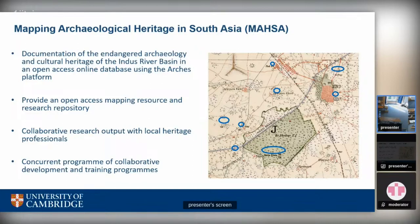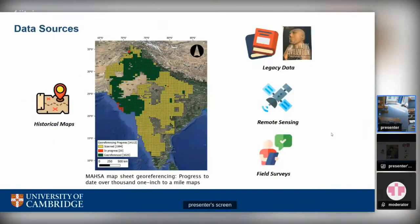One of the main data sources we are using to document archaeological heritage is historical maps — specifically Survey of India maps developed as part of Britain's colonial presence in South Asia. From early 1900s, these have proved to be a very rich source of archaeological sites. Importantly, these maps predate most urban and agricultural expansion, which has resulted in the loss of many archaeological sites, making them a great source of that information.